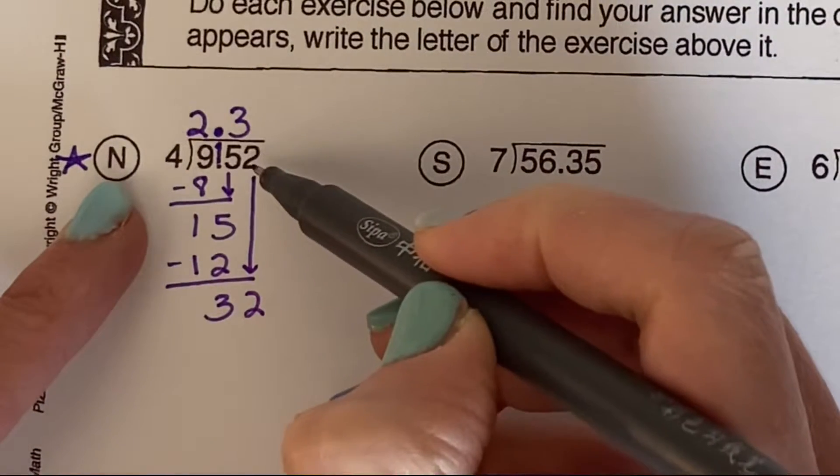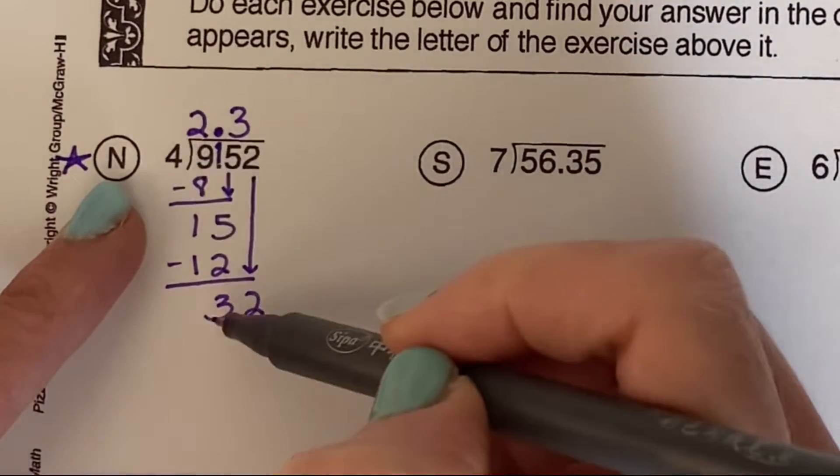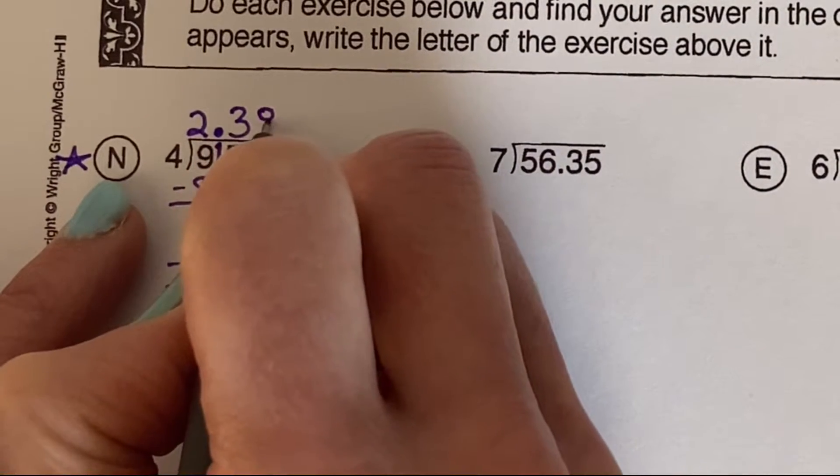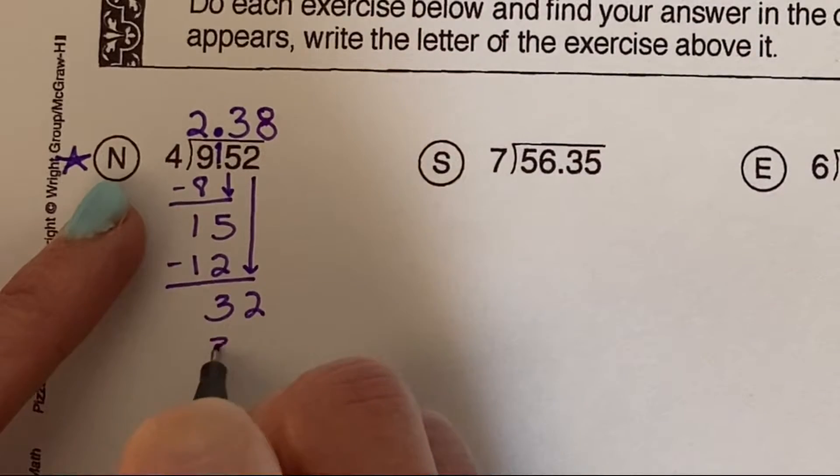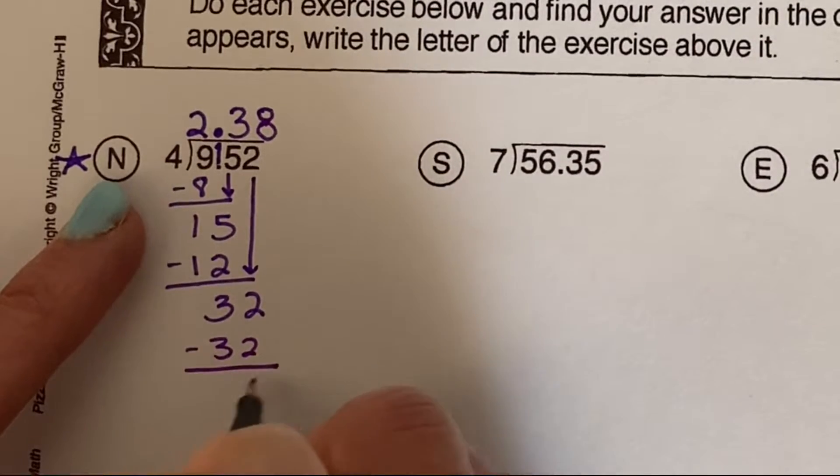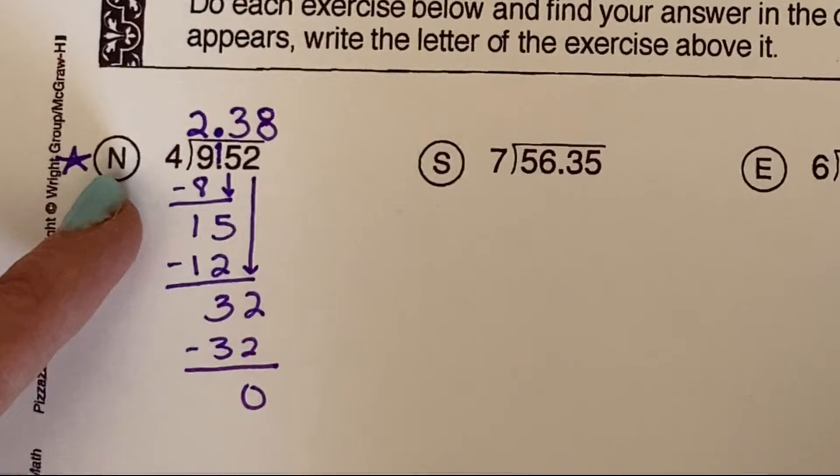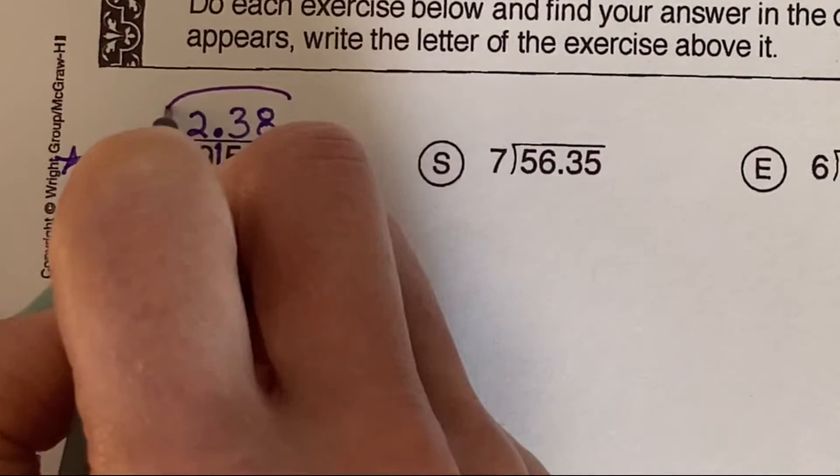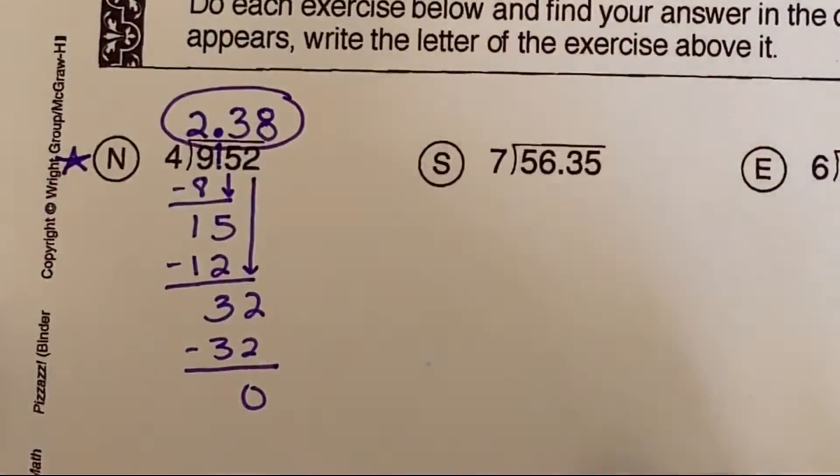Now we're in our hundredths place. How many times does 4 go into 32? It goes in 8 times, so it goes straight up the elevator. 8 times 4 is 32. Subtract, and we should get a remainder of 0. All of the problems on this page, you'll end up with a remainder of 0. That won't always happen, but for this page it will. So we have 2.38.